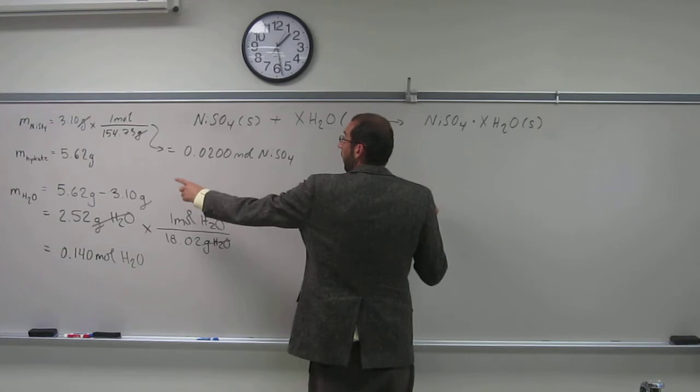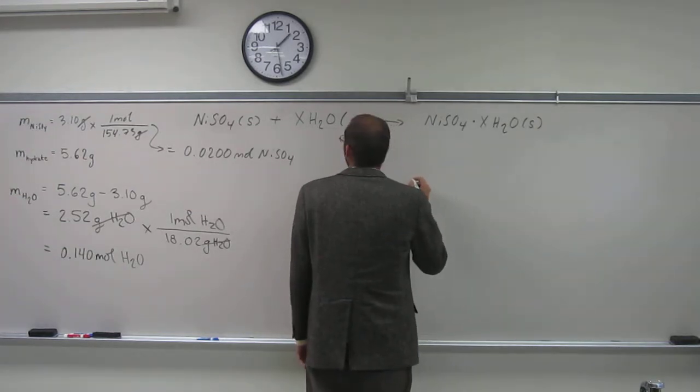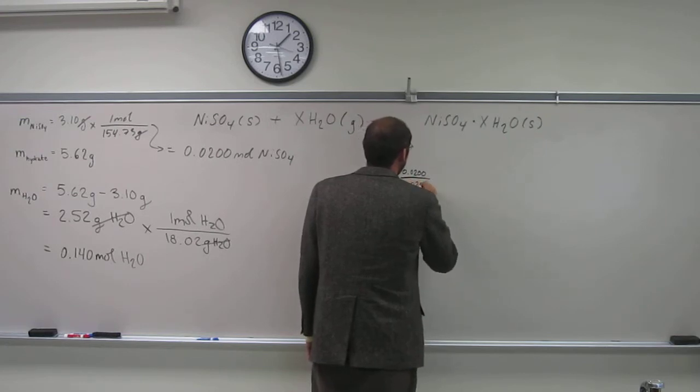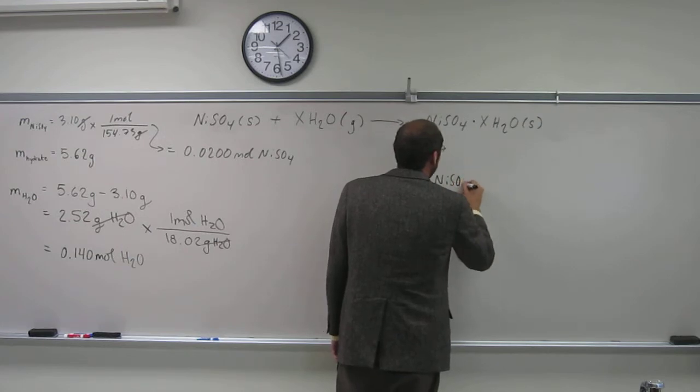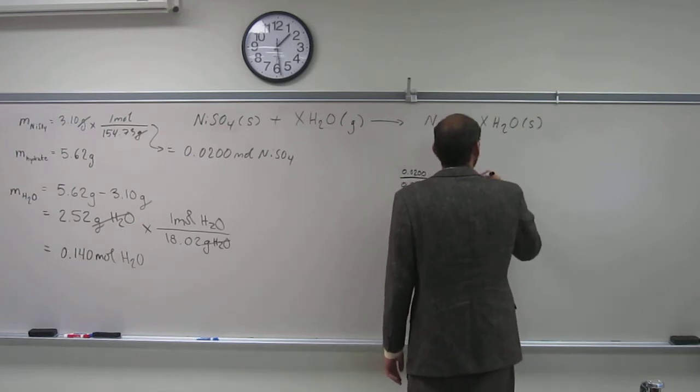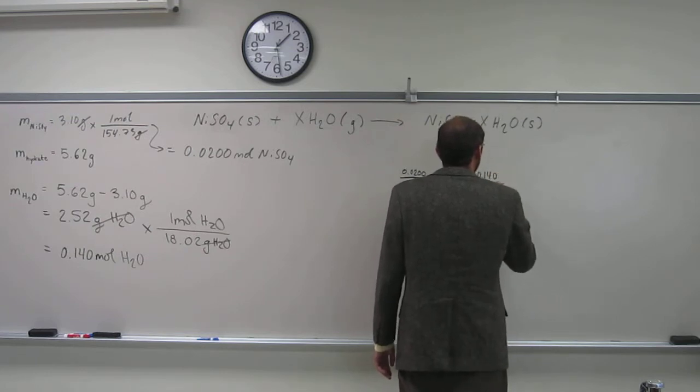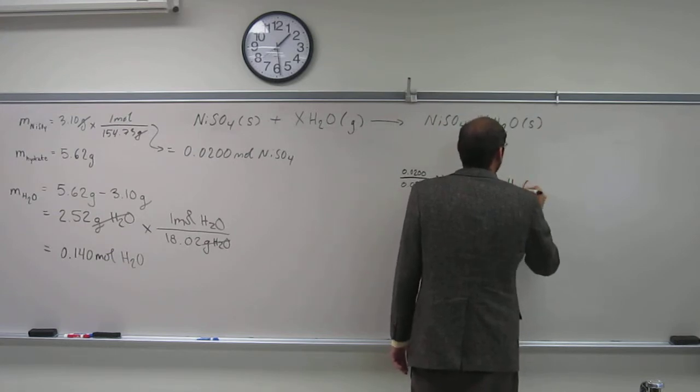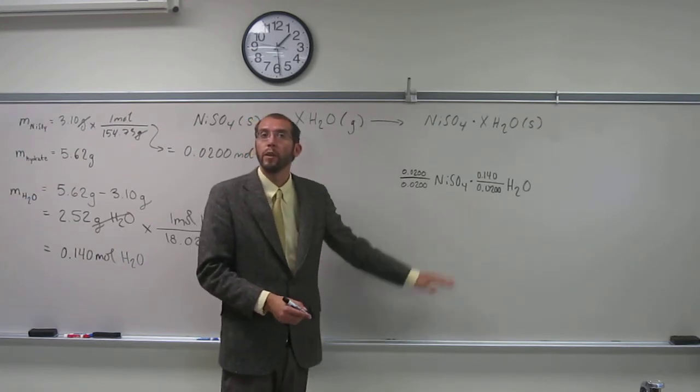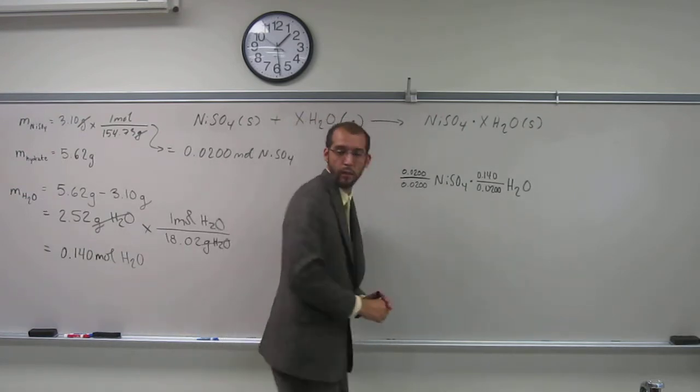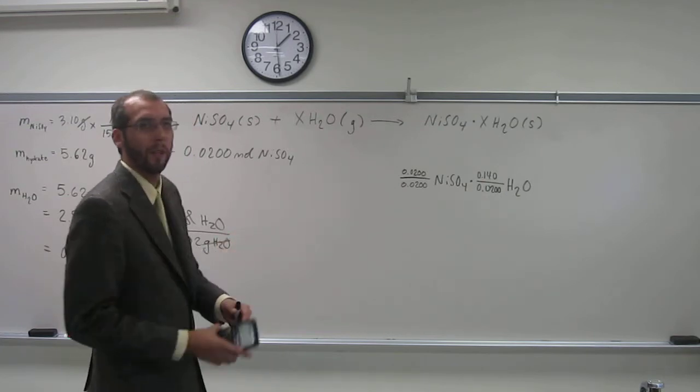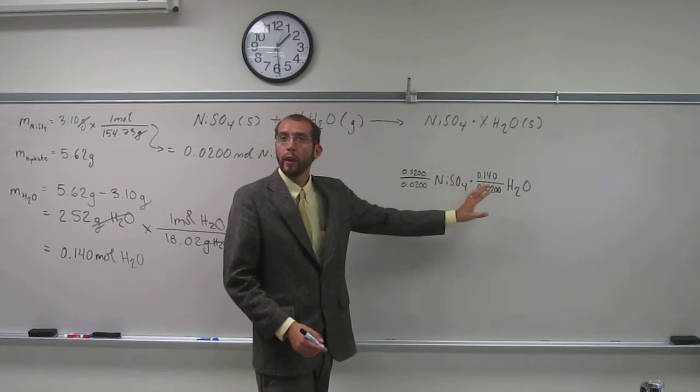The number of moles of nickel(II) sulfate is going to be 0.0200 divided by 0.0200 to H2O. Like that. Very similar to doing the empirical formula except, in this case, we're figuring out coefficients. When we divide 0.02 divided by 0.02, that gives us 1, right? The other one is, well, we don't even have to do it. It's 7, right? Is everybody okay with that?